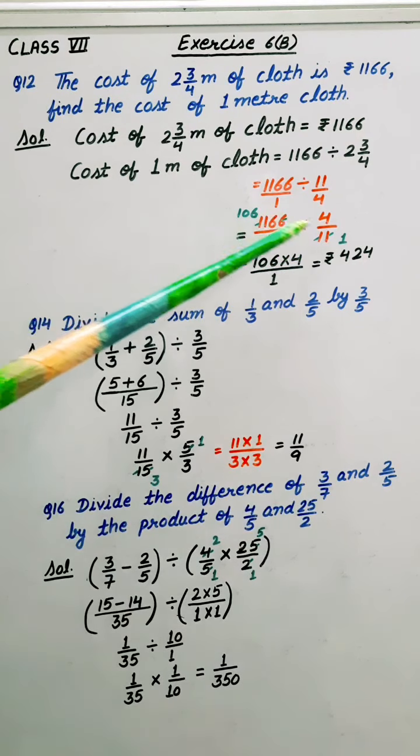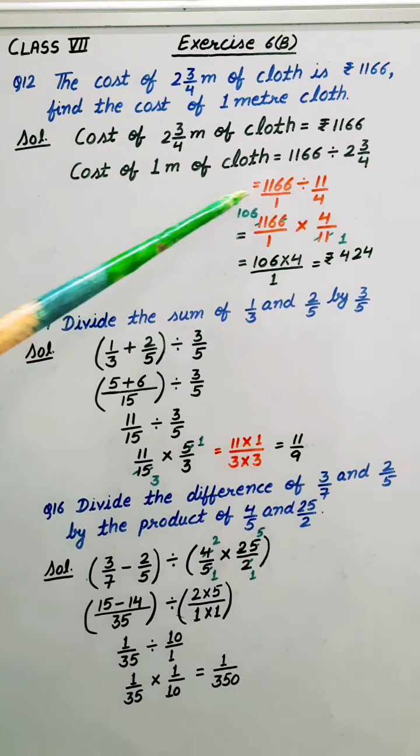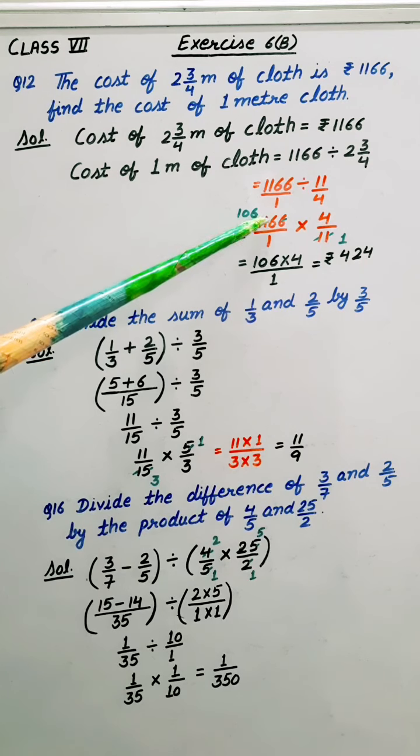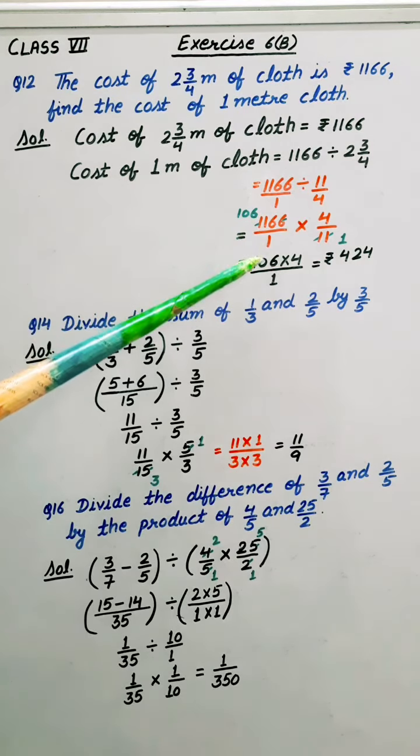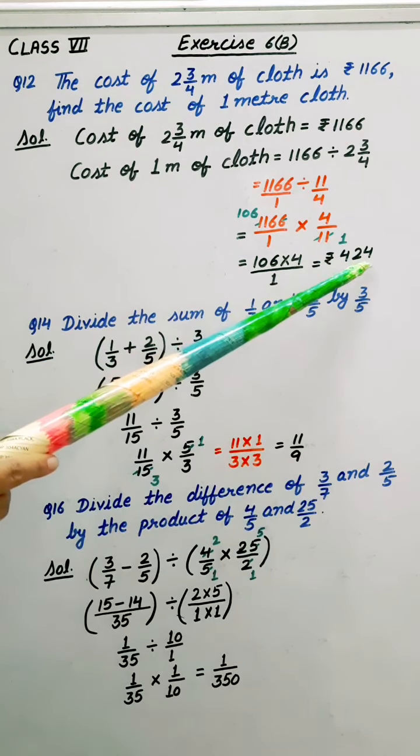Now reducing these two numbers by 11 only. So 11 ones up and 11 into 106 times we will get 1166. So finally result is 106 multiplied by 4 and answer is rupees 424.